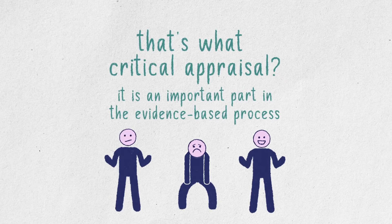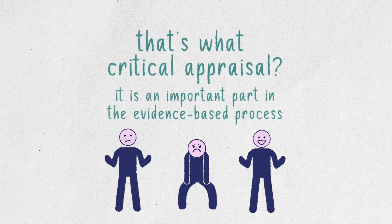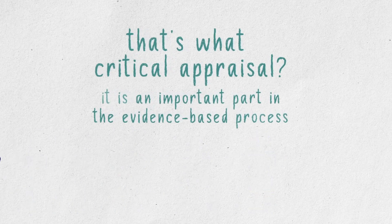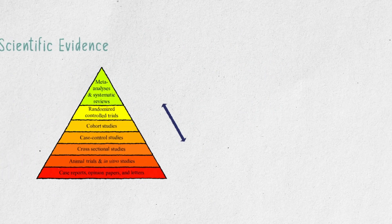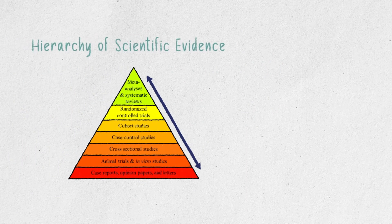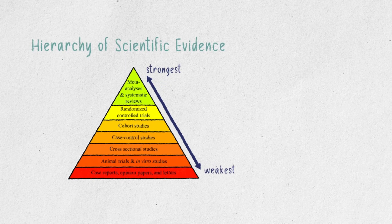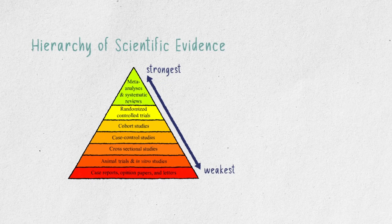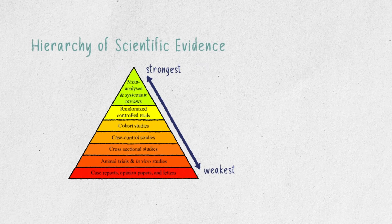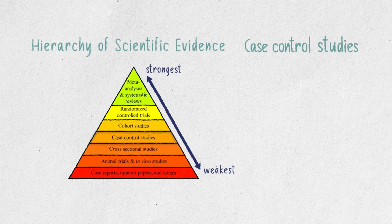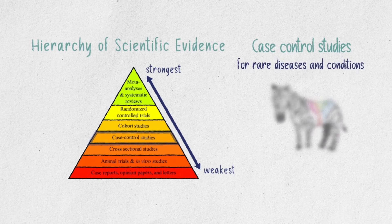To put it simply: can I trust the results I've seen? Is it applicable or relevant to the research? In evidence-based research, there is a well-known hierarchy of study designs. Each of these studies has different strengths and weaknesses, and they are all at risk of different types of biases — some more than others. For example, case control studies are good for rare diseases and conditions.